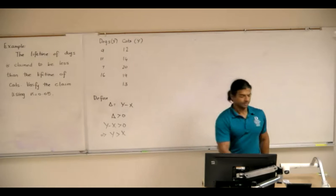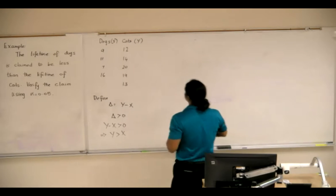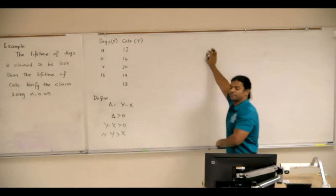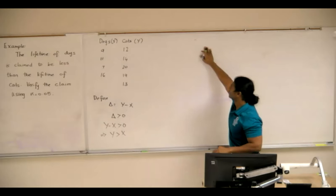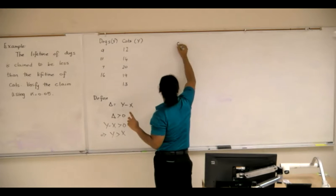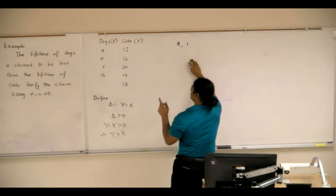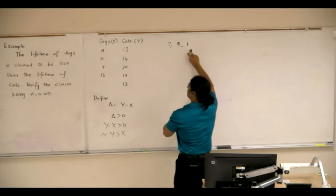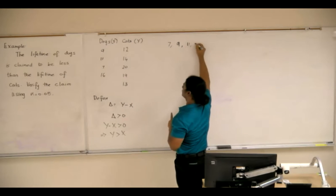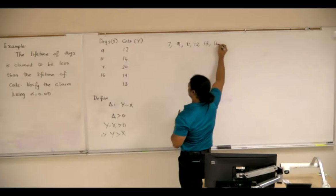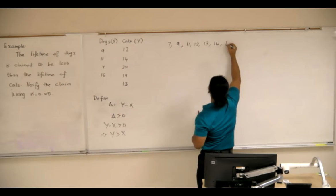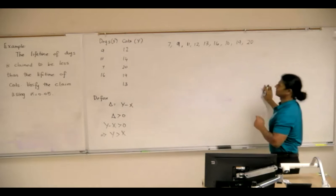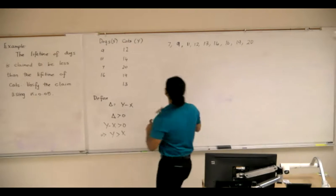Problem 32. So first we've got to put in order, we will stick to the convention that we had. So 9, followed by 7, 9, 11, 12, 13, 14, 16, 19, 20. That is the sorted data, the data that we have.